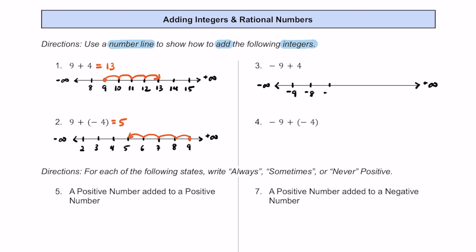Since we're adding a positive number, we'll be moving to the right: negative 8, negative 7, negative 6, negative 5 — these are all numbers getting bigger — negative 4, negative 3. We're starting off at negative 9, so we put a dot there. Adding positive 4 means moving right: 1, 2, 3, 4. We end up at negative 5, so negative 9 plus 4 equals negative 5.